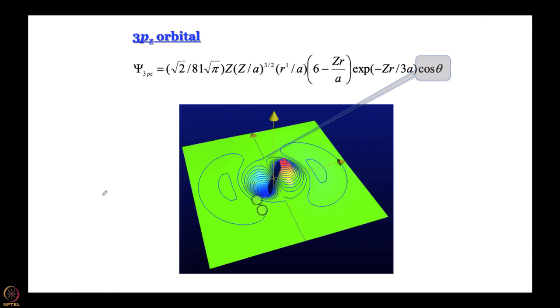Where does PZ orbital get its name from? Why is it Z? Well, SPDF come from some ancient spectroscopic nomenclature, but why is it Z? Because it is along Z axis - same symmetry as Z. Another way of thinking is if I go back, where is the angular node? The angular node is at cos theta equal to 0, or that is Z is equal to 0.